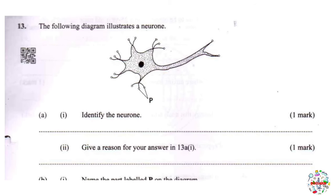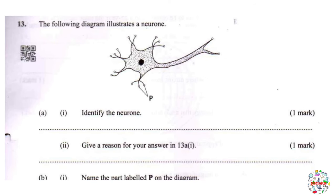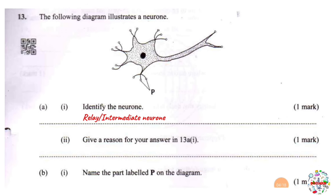Moving on to question 13: the following diagram illustrates a neuron. Part A Roman 1: identify the neuron. This is the intermediate or relay neuron. Part A Roman 2: give a reason for your answer. The reason is because it lacks the myelin sheath — this is a characteristic feature of the relay neuron.